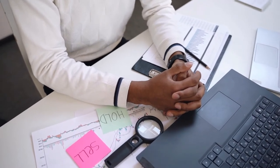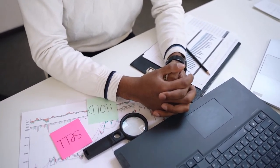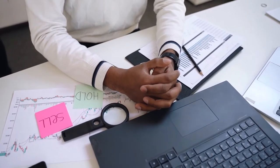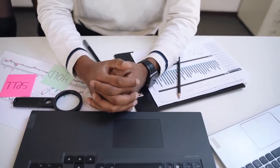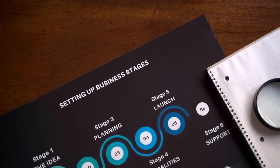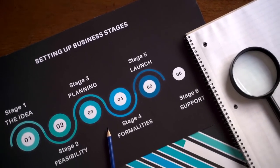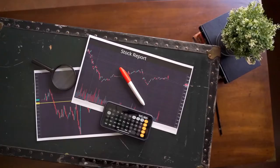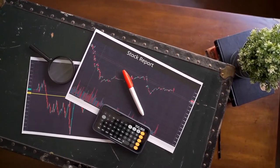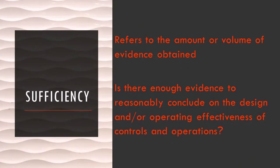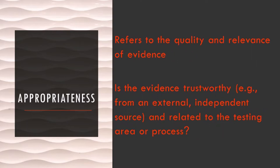Auditors may accept records and documents as genuine unless they have reason to believe those documents could be fraudulent or fictitious. A critical component of the audit engagement is that auditors use their professional knowledge, skills, and experiences in good faith and with integrity to diligently gather information and objectively evaluate the sufficiency and appropriateness of evidence. Sufficiency asks: is there enough evidence to conclude? Appropriateness asks: is the evidence relevant to what we are assessing?